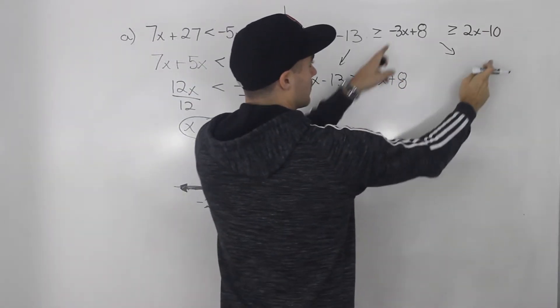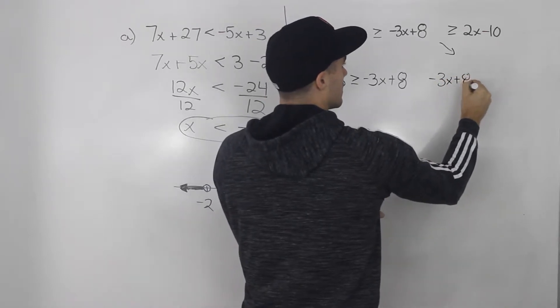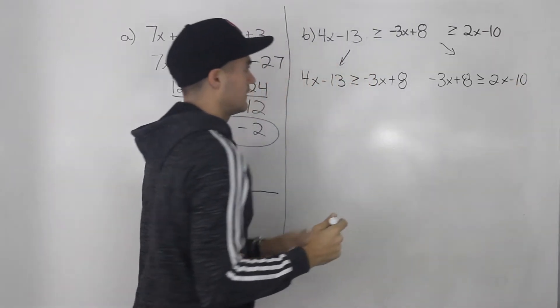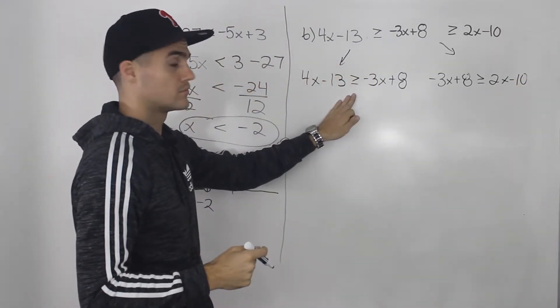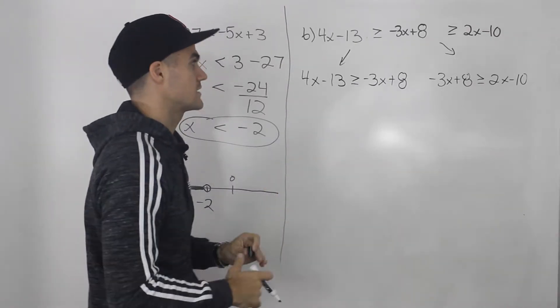And then this portion I'll write out here. So I'll have negative 3x plus 8 greater than or equal to 2x minus 10. And then I just like to solve both of these inequalities separately and then combine the solutions at the end.